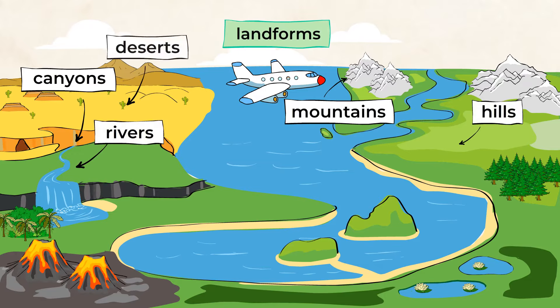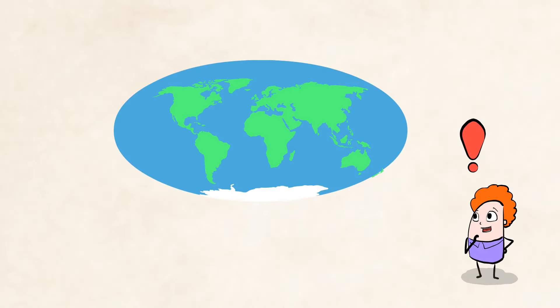Landforms can be small, like hills or rivers, or massive, like deserts and mountains.